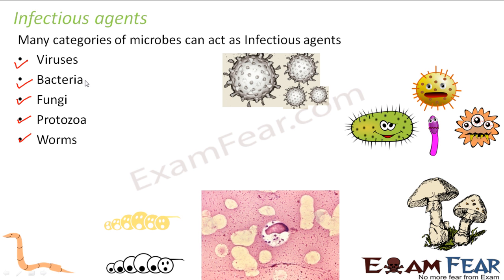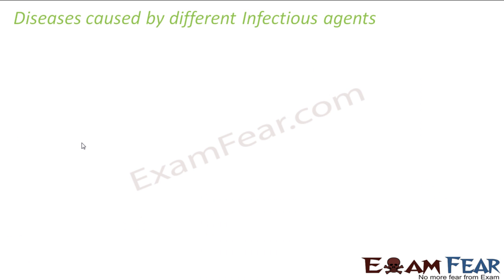Some of these infectious agents are unicellular, while some like worms are multicellular as well. They can be unicellular or multicellular organisms, and they act as the agents who spread infection. Now let us look at the diseases which are caused by different infectious agents.